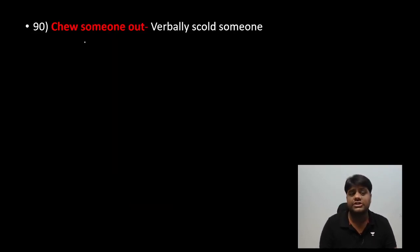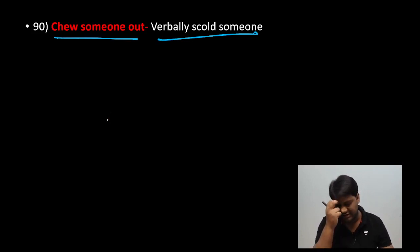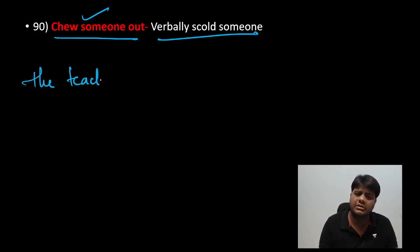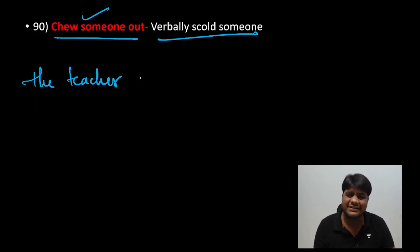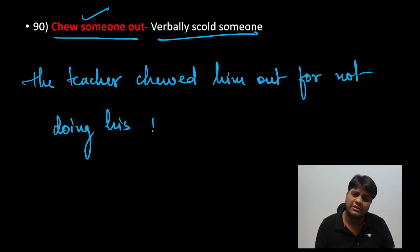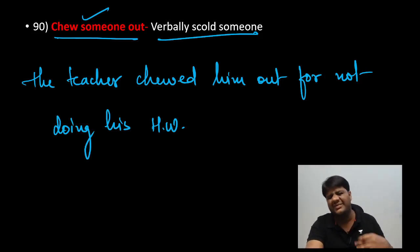Next: 'chew someone out.' It does not mean physically chewing — it means to verbally scold someone very harshly. For example: 'The teacher chewed him out for not doing his homework.' So chewing someone out means giving someone a very strong verbal scolding.